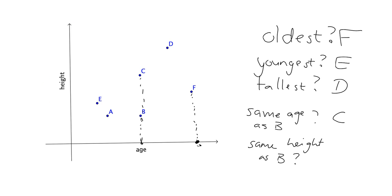So the further up you are, the taller you are. So people who are the same height must be at the same point up. And so the person who's the same height as B will be person A.